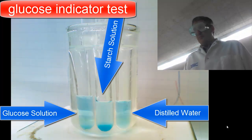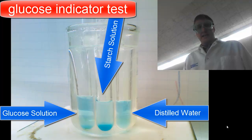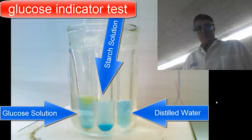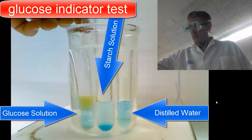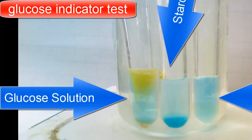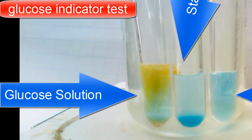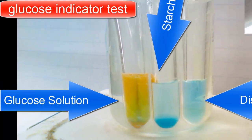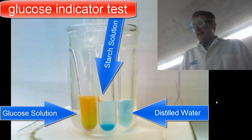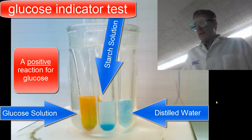If glucose is present in any of these test tubes, we should see a change. Now if you look carefully, we're beginning to get a change in the test tube here, which is the glucose. There's a yellow, greenish, rust color precipitant that is forming, and it's clearly different from the other test tubes. That is a positive reaction.